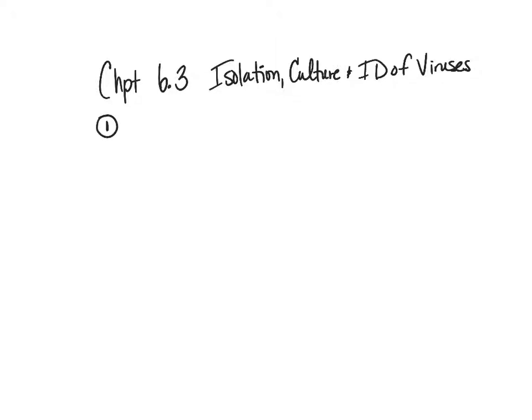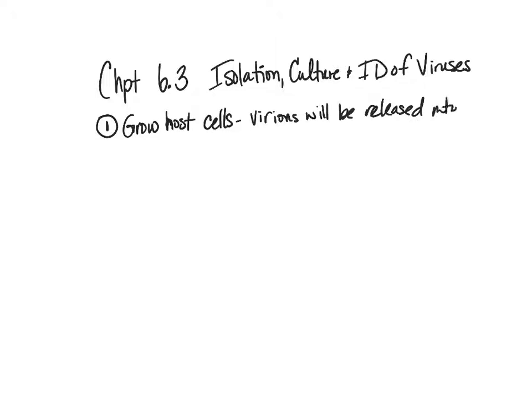One, we need to grow host cells. Because if it's an obligate intracellular organism, we have to have those cells for it to live inside of. For example, if we're talking about a bacteriophage, we can have an inoculum — a medium inoculated with bacterial cells, grow the bacteria, and then add the virus. It can infect the bacteria cells, and then the virions will be released into the medium.